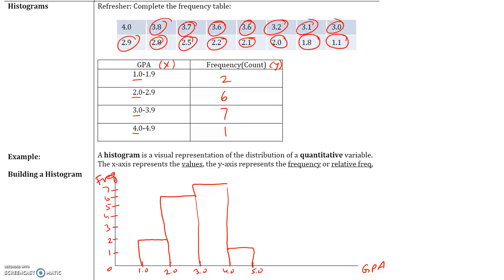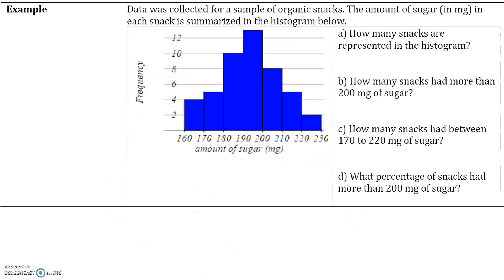A histogram comes from a frequency table. Here's an example: data was collected for a sample of organic snacks. The amount of sugar in milligrams in each snack is summarized in the histogram below. Part A: how many snacks are represented in the histogram? In the first class, snacks with sugar between 160 and 170 milligrams, there are 4.